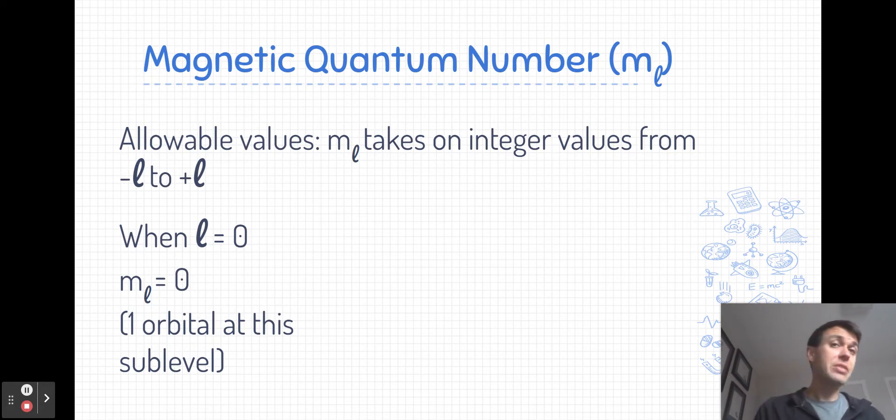As I mentioned in the previous video, when l is equal to zero or an s-type sublevel, that is a spherical shape. If we think about it in terms of orientation, it makes sense. A sphere can only have one orientation because it's symmetrical. So we see here the connection between l and m_l.